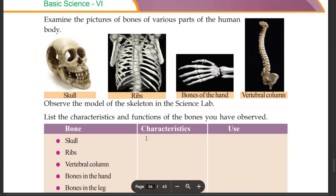Examine the pictures of the bones of various parts of the human body. The portions include the skull, ribs, bones of the hands, and vertebral columns. Observe the model of the skeleton in the science lab. List the characteristics and functions of the bones you have observed.